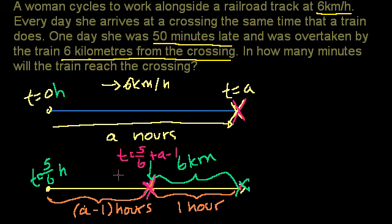So if we want to know how many minutes it takes the train to go from this point to this point, we just subtract the two times. The time it takes, in hours, is a, that a, minus this.